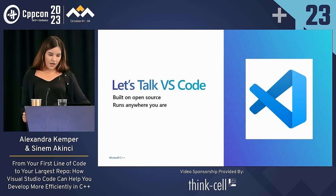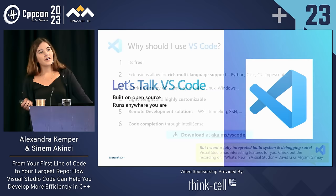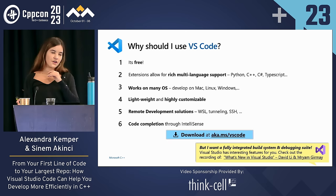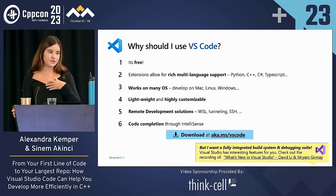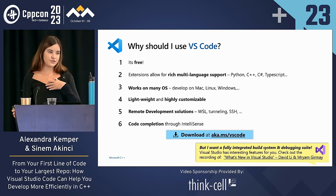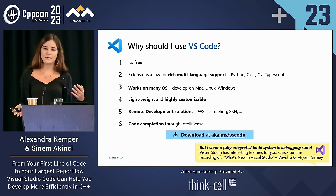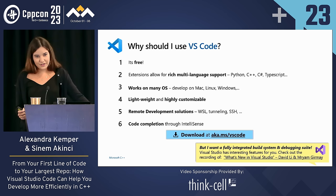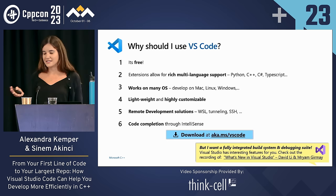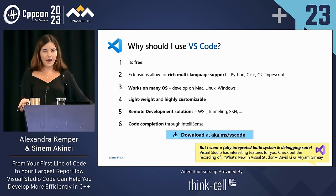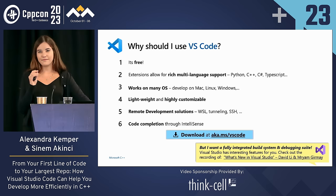VS Code is open source, free, and it can work on any OS. You can develop from Mac, Linux, or Windows, and there are remote development solutions in the extensions that allow you to have SSH connections, remote tunnels, or WSL support. You can also have extensions for any sort of multi-language support you may need. As C++ developers, we'll have the C++ and CMake tools extensions. But if you're also developing with Python and TypeScript, you can customize your VS Code through extensions, making it really lightweight, highly customizable, with IntelliSense built in.